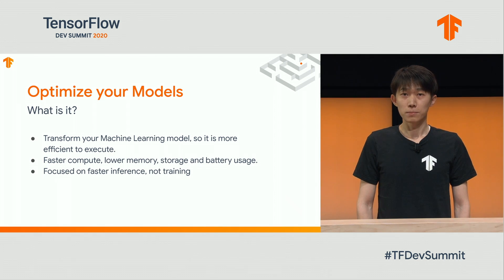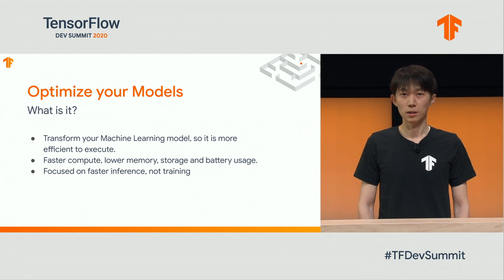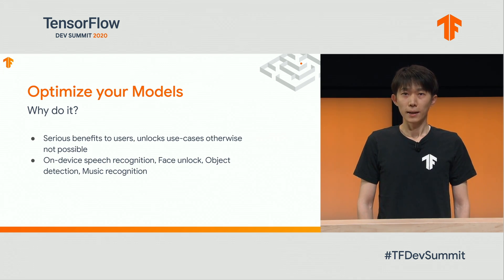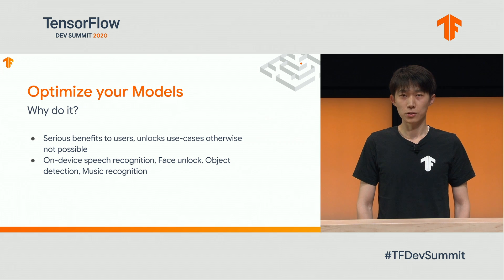Model optimization means transforming your machine learning models to make them efficient to execute. That means faster computation, as well as lower memory, storage, and battery usage. It is focused on inference instead of training. Because of these benefits, optimization can unlock use cases that are otherwise impossible.